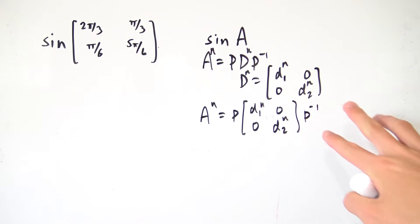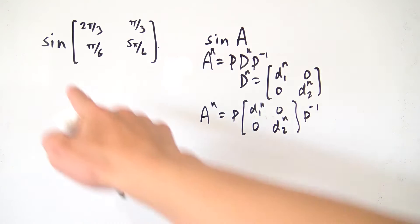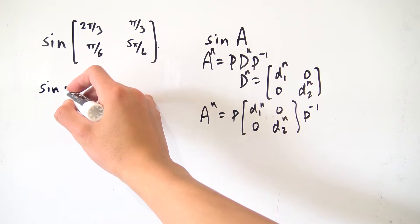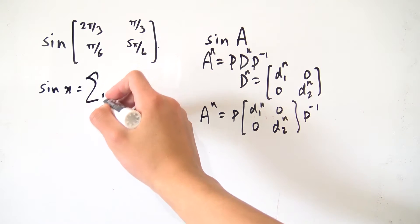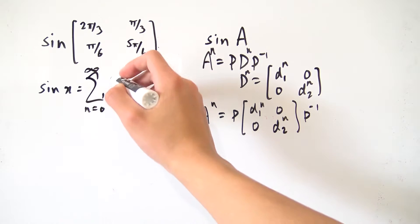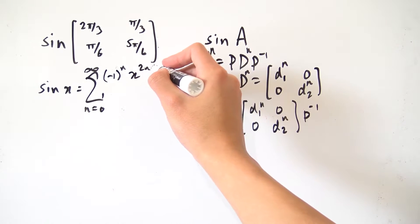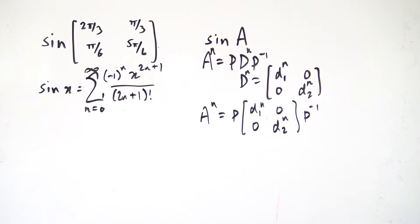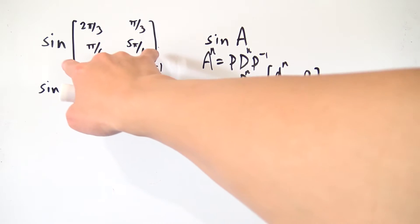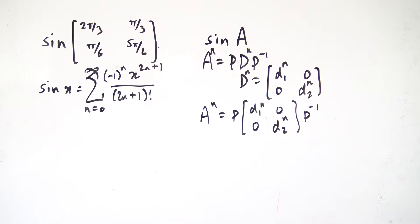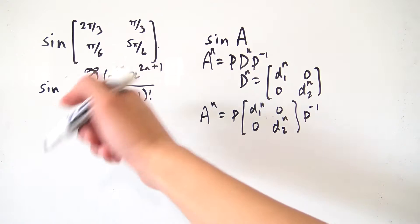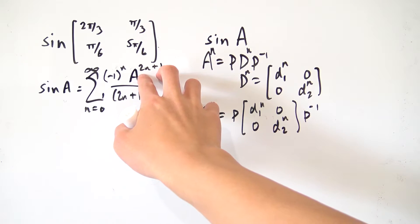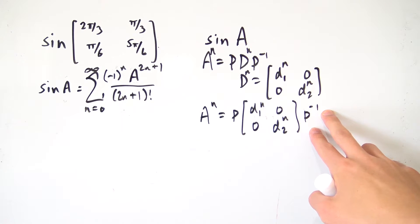Why do we want to know how to define powers of matrices? Our sine function can be expressed in terms of a power series. If we have sine of some variable x, we can write it as its Maclaurin series: the sum from n=0 to infinity of (−1)ⁿ x^(2n+1) over (2n+1)!. That's the power series expansion for sine of x, and since we want to define the sine of a matrix, it's reasonable that if we have a matrix as the argument, we just replace the x's with A's.